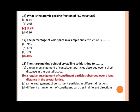Next, the sharp melting point of crystalline solids is due to dash. Options are: a) a regular arrangement of constituent particles observed over a short distance in the crystal lattice; b) a regular arrangement of constituent particles observed over a long distance in the crystal lattice; c) same arrangement of constituent particles in different directions; d) different arrangement of constituent particles in different directions. The correct answer is b, a regular arrangement of constituent particles observed over a long distance in the crystal lattice.